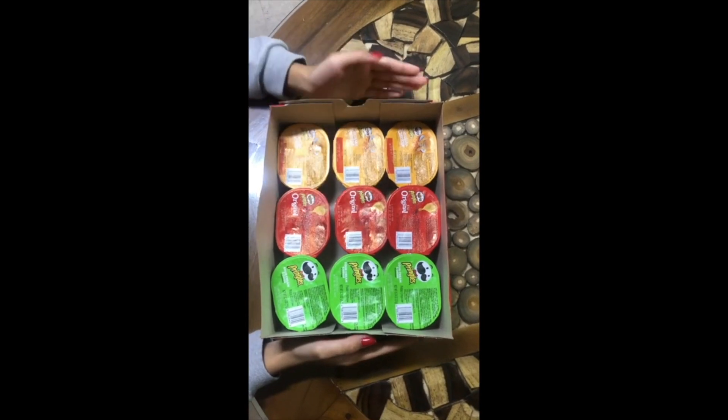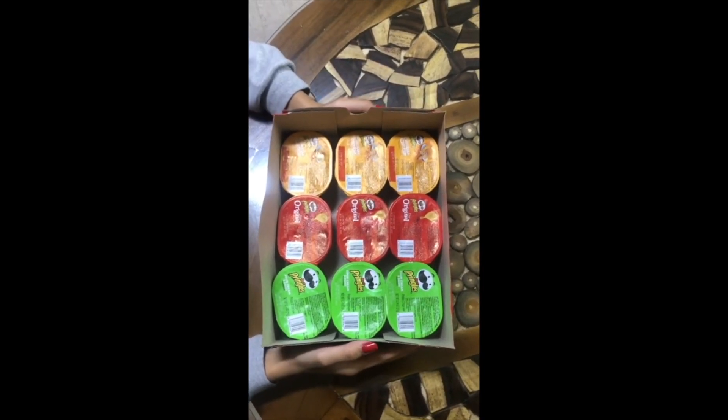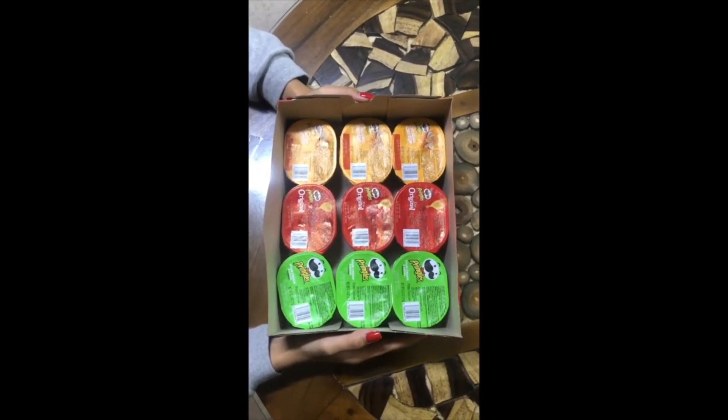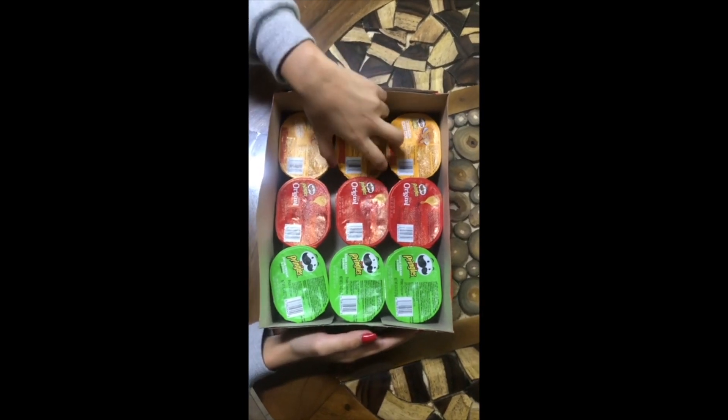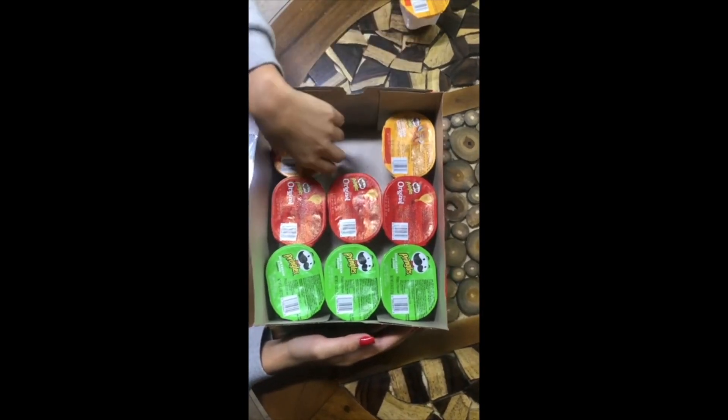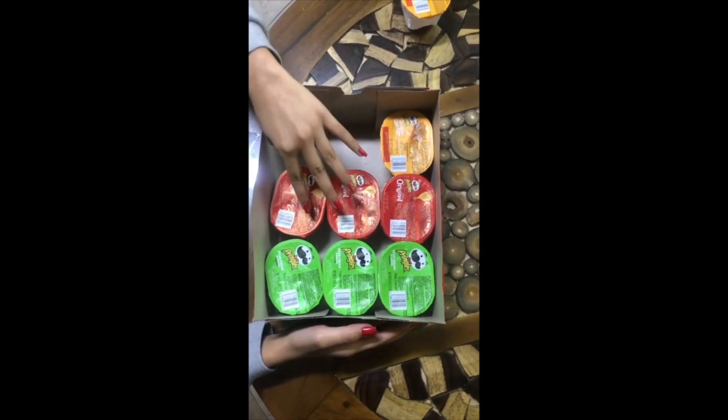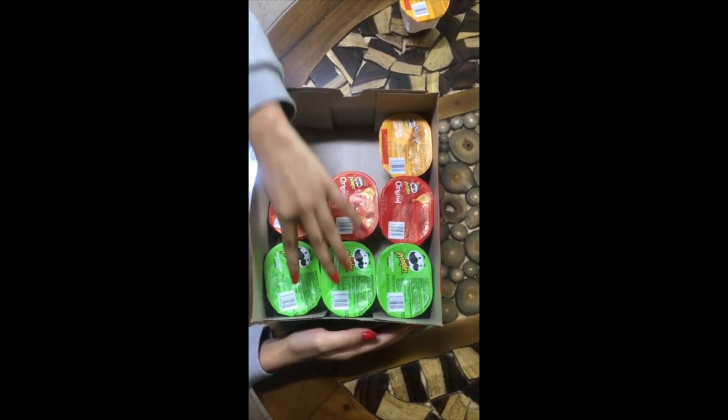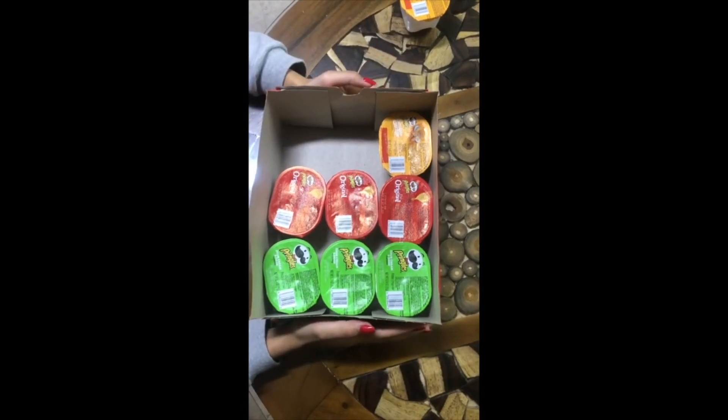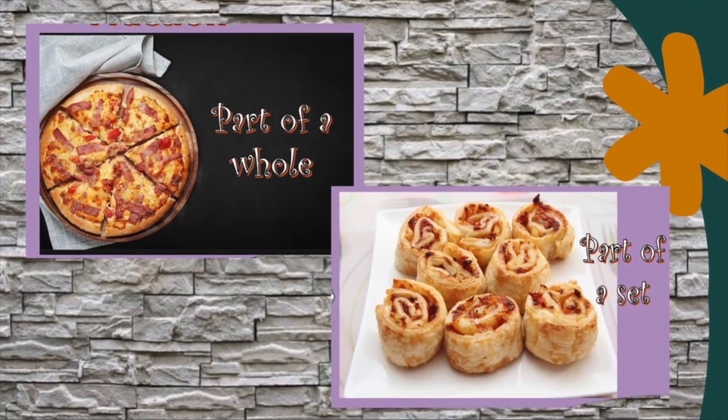One, two, three. Three-ninths. Now let's say Benedict ate two yellows. What fraction part is left? One, two, three, four, five, six, seven. Seven-ninths. Good job!